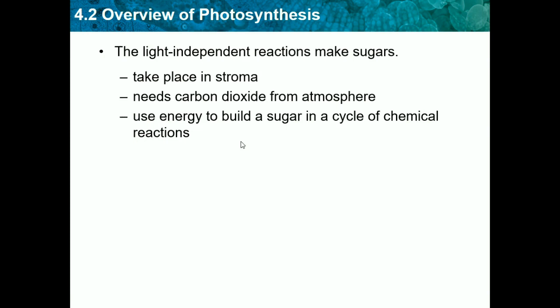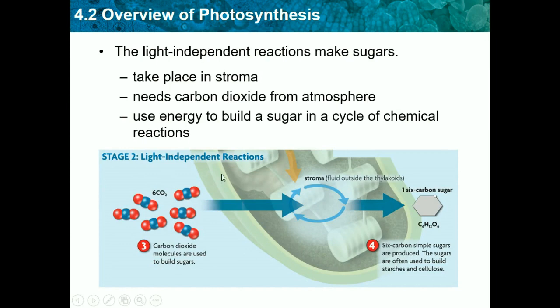The light-dependent reaction doesn't have a special name — it's just called the light-dependent reaction. But the second stage is called the Calvin cycle. In this cycle, the process needs carbon dioxide and the ATP from the first reaction to produce glucose or a simple sugar. Carbon dioxide molecules are used to build sugars, and six-carbon simple sugars are produced. The sugars are often used to build starches and cellulose. Carbon dioxide comes in, goes into the Calvin cycle using the ATP to make sugar.